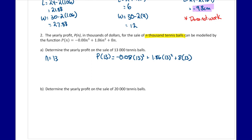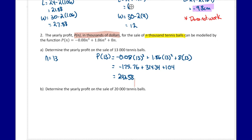Calculating p(13): we get negative 175.76 plus 314.34 plus 104, which equals 242.58. Since p of n is in thousands of dollars, this actually works out to 242,580 dollars. Always keep in mind the units and what the variables represent.